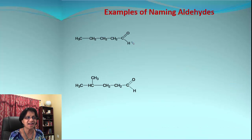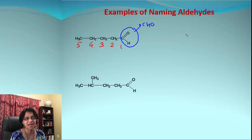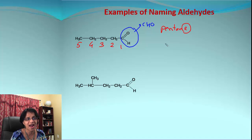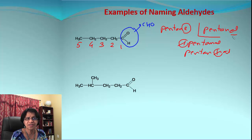Here is an aldehyde with the functional group CHO. We count the carbon atom belonging to the aldehyde group as number one and keep numbering the rest to find the longest chain. The parent chain here has five carbon atoms — that stands for pentane. We cross out the 'e' and add 'al,' giving pentanal. Since the aldehyde is always at position one, we don't write the '1,' so the answer is simply pentanal.